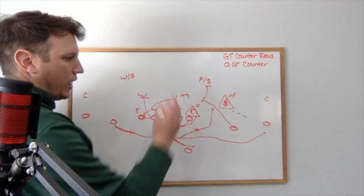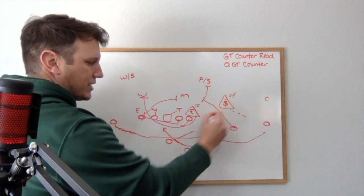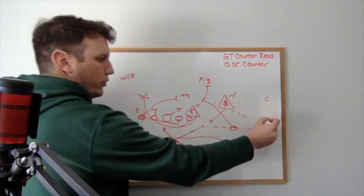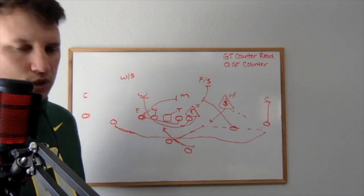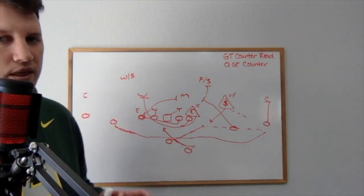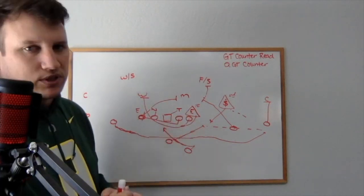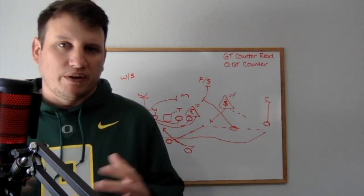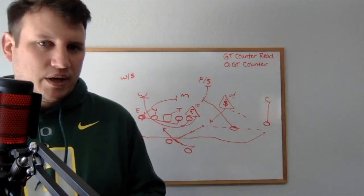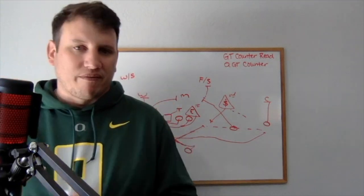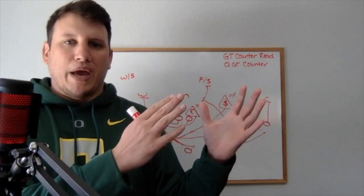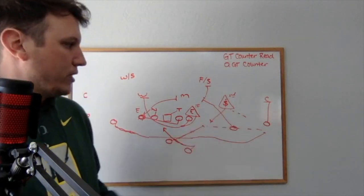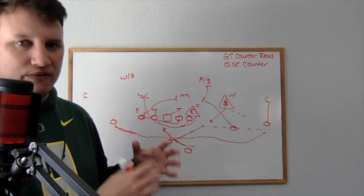If the overhang defender plays out wide with the jet receiver running the bubble, the quarterback continues running at him and turns upfield. If the overhang defender sees the quarterback coming and decides to take him, we get the ball out to the bubble route, protected by the number-one receiver blocking the corner. So we've evolved from counter tray read — a first-level read like inside zone read — to adding a second-level read, making it true triple option. It's very difficult for a defense to defend with all the moving parts.